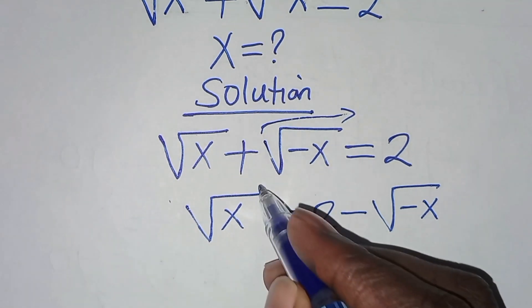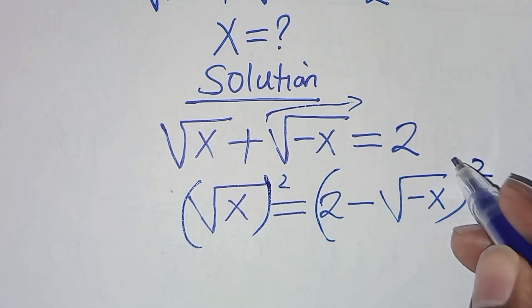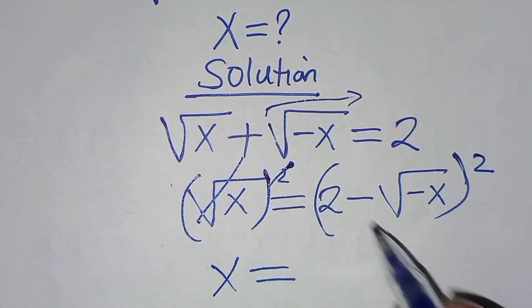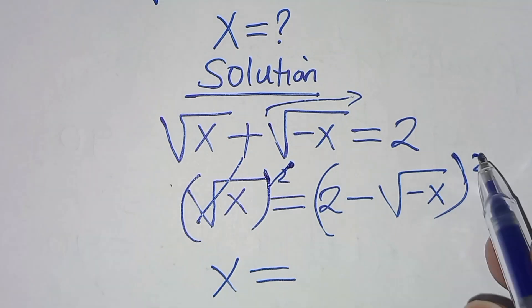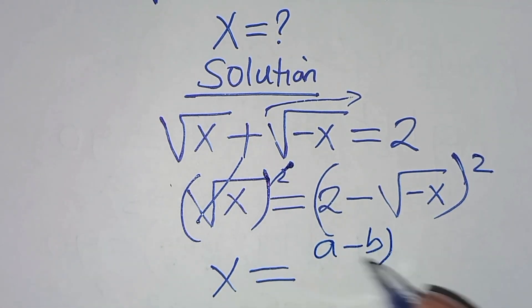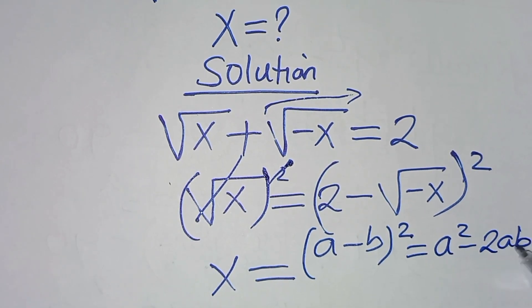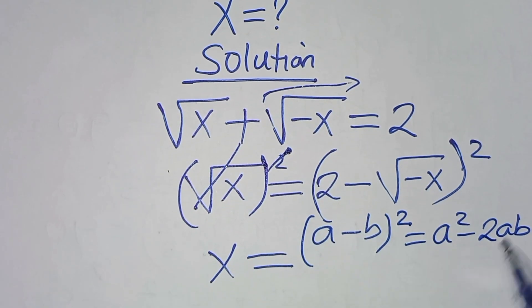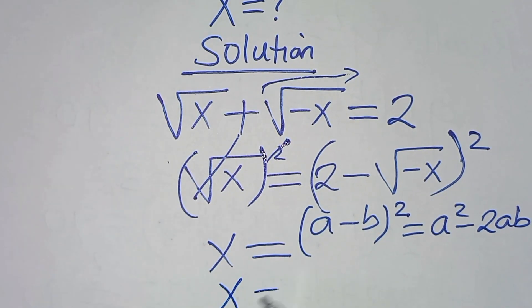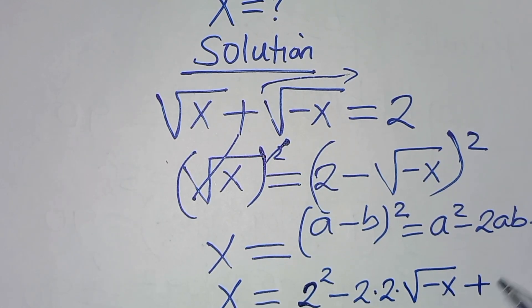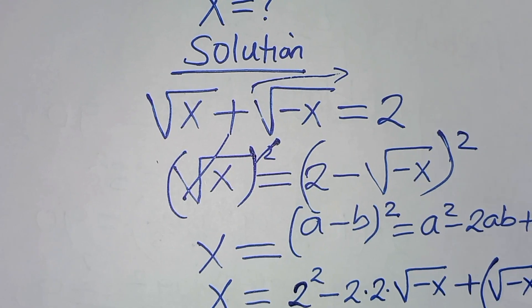The next step: let's square both sides to remove the square root sign, so we have x equals the quantity 2 minus square root of minus x, squared. This is in the form of (a minus b) squared, which we can express as a squared minus 2ab plus b squared. Applying this algebraic identity, we have x equals 2 squared minus 2 times 2 times square root of minus x, plus square root of minus x, squared.